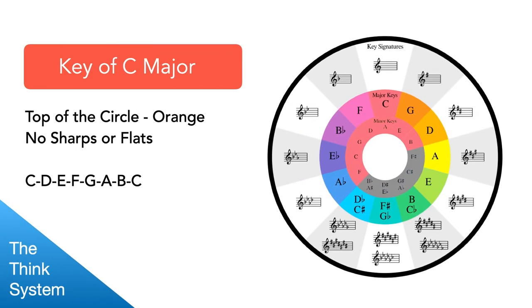So here we have our magical friend, the circle of fifths. The circle of fifths starts at the top here with C major and it goes around to the right by fifths. G is one fifth above C. A fifth is an interval of five steps. D is a fifth above G. A is a fifth above D and so on.